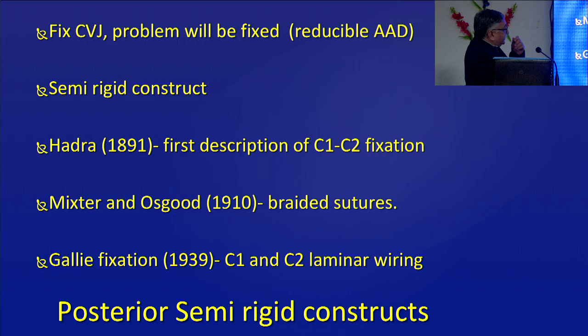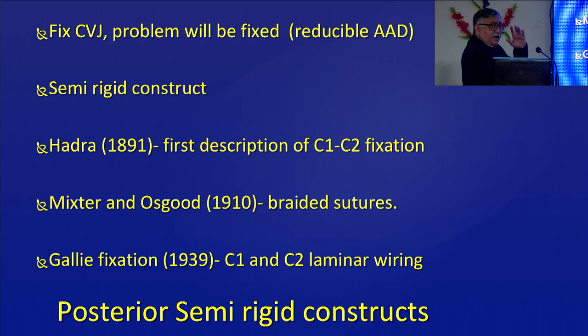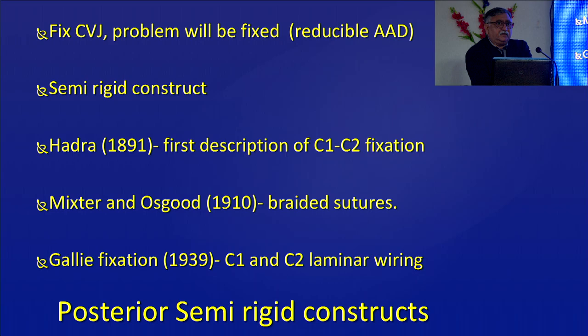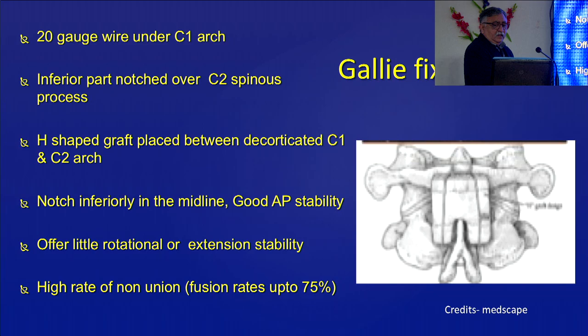It all began with semi-rigid constructs — take stainless steel wire, fix C1 and C2 together. There is no screw going into the bone, so there is always some movement. The earliest descriptions are way back in 1891, then sutures were used by Mixtor and Osgood, who also described discectomy for the first time. Gally fixation came before the Second World War, in the late 30s — C1 and C2 laminar wiring, where you wire the lamina of C1 to the spinous process of C2. These are all posterior semi-rigid constructs.